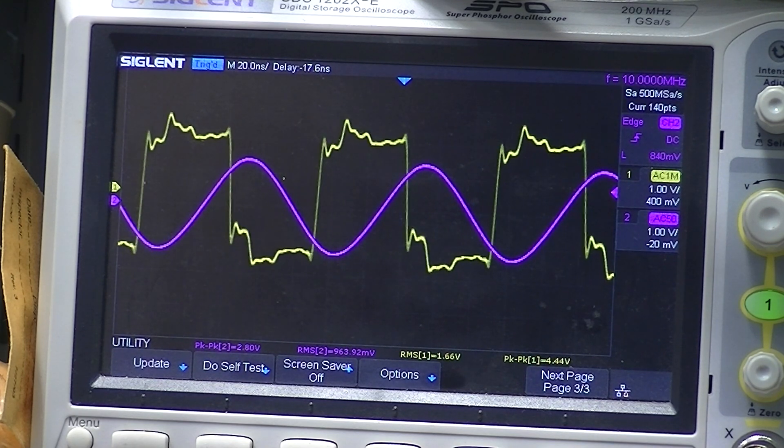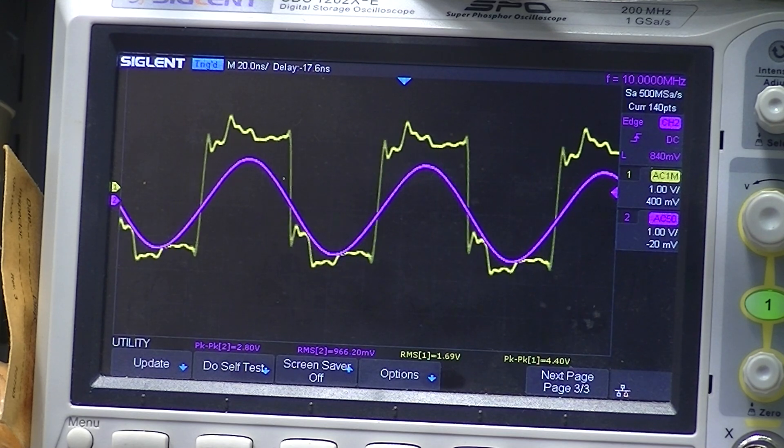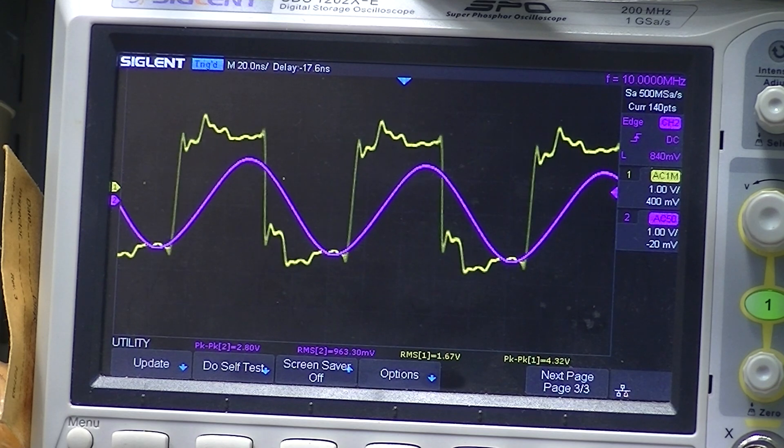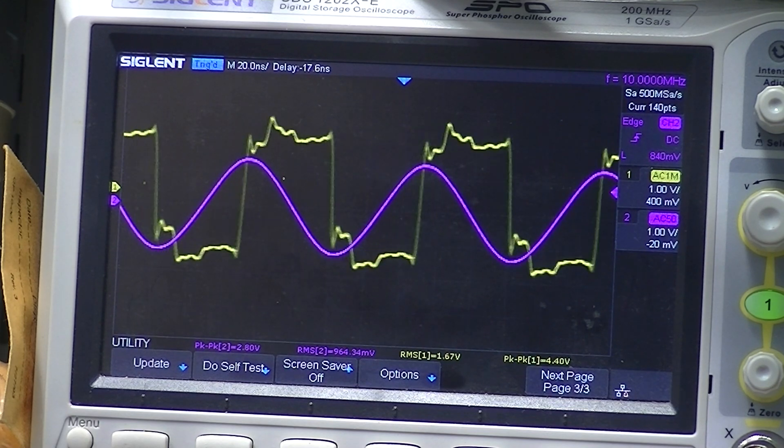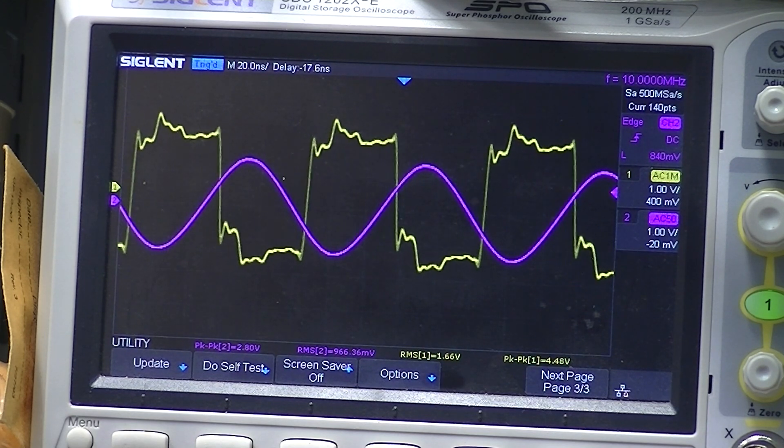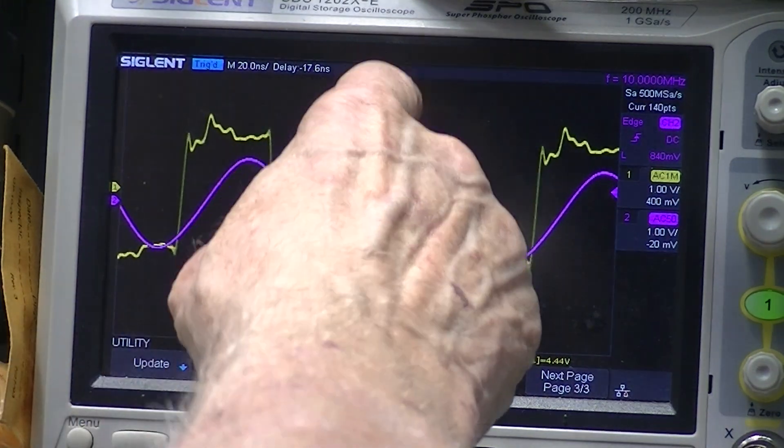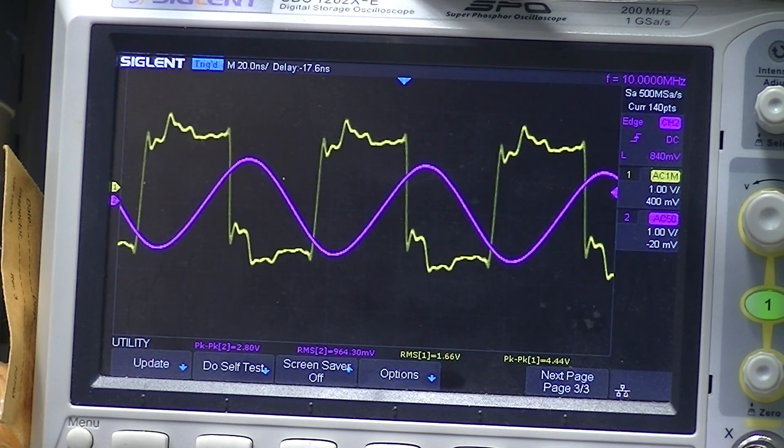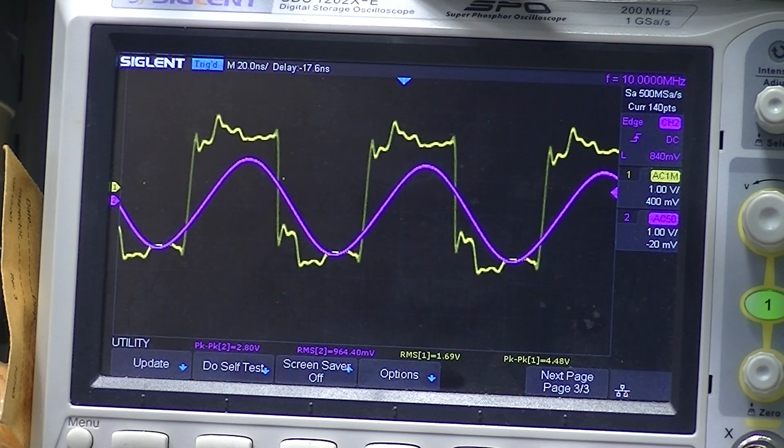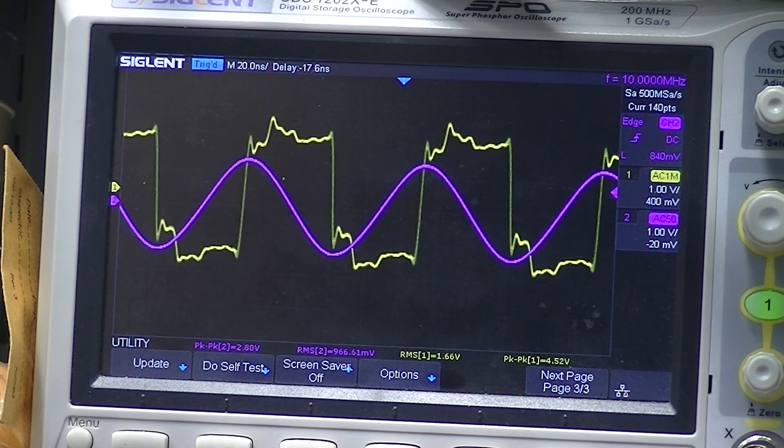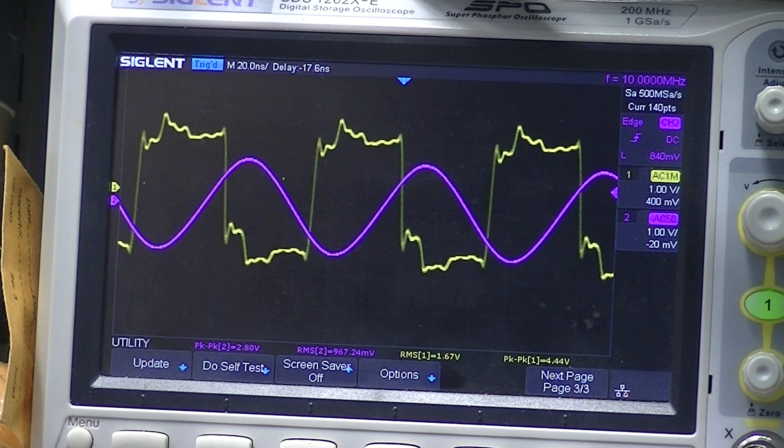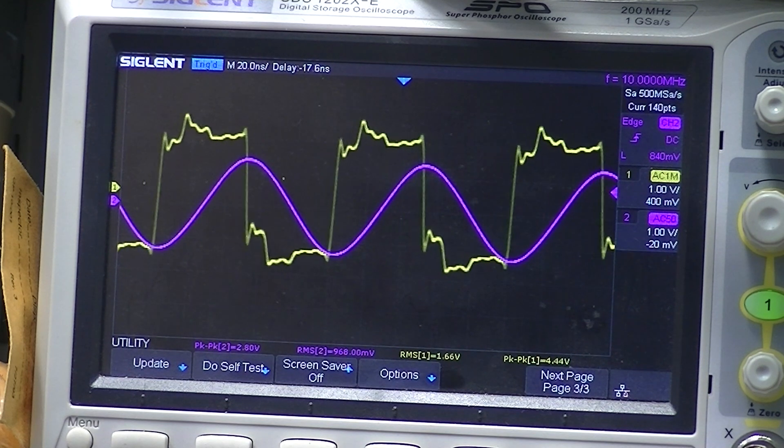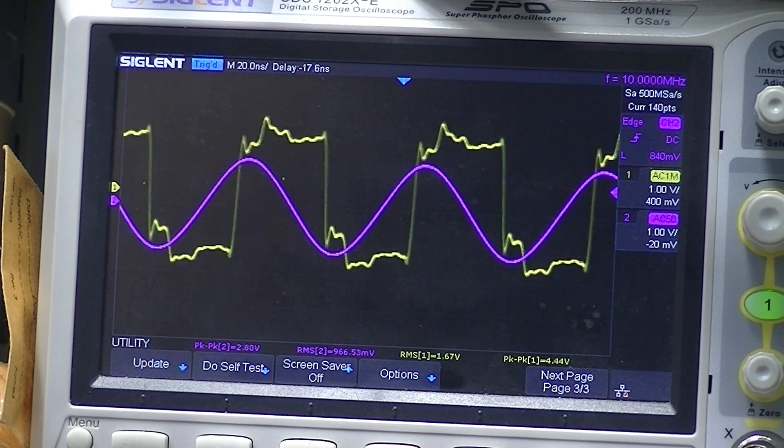If I could receive WWV at 10 megahertz, I could strip away with a filter the sideband information and I would be left with some sort of a sine wave that's pretty close to 10 megahertz. The signal WWV transmits in Fort Collins, Colorado is 10 megahertz plus or minus 10 to the minus 22.